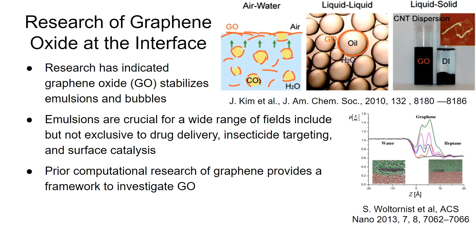Interestingly, you can see that the graphene doesn't actually interface directly at the interface. The graphene chooses to be within the oil solution a little bit away from the interface. But as you add more sheets, additional sheets stack on top of each other and move towards the interface. This might be similar to what we would expect in graphene oxide, but the further functionalization of adding groups like alcohols and epoxides might drag it closer to the water phase as opposed to the heptane phase because it is more polar.